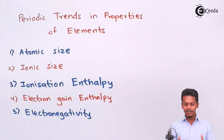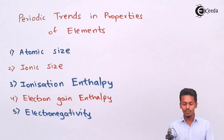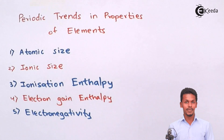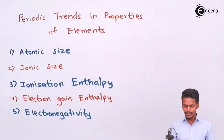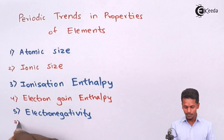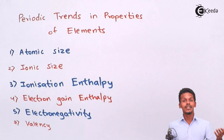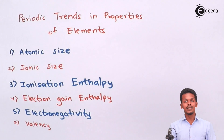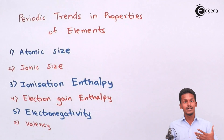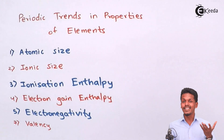These are all basically the periodic trends we can observe in the properties of elements in the periodic table. The last property is valency, which also changes when we talk about groups or when we observe trends across periods.